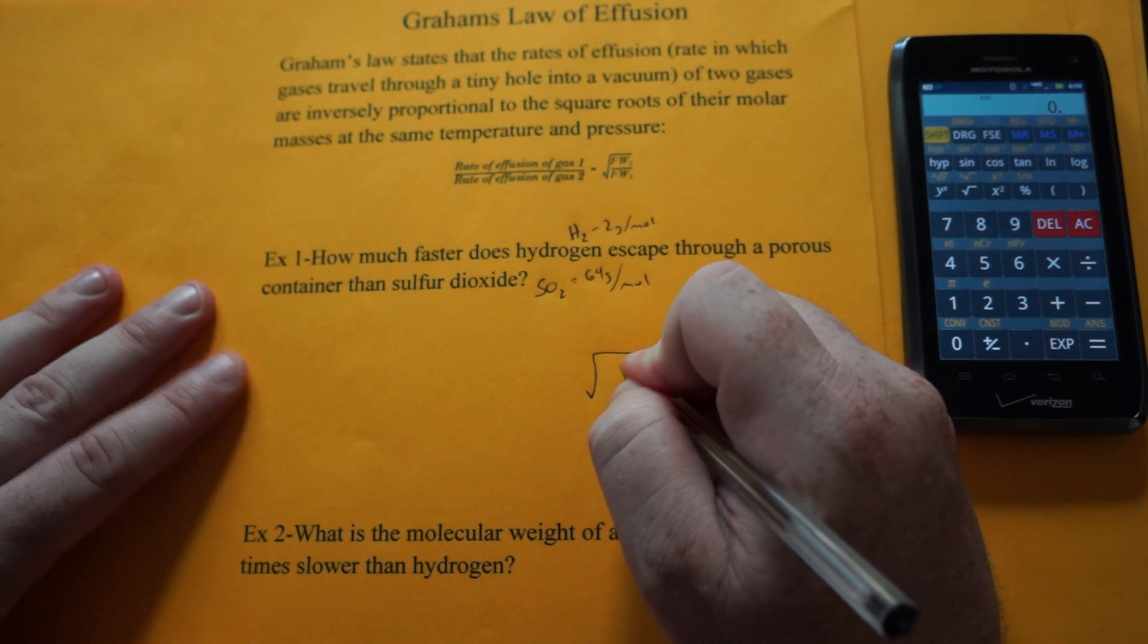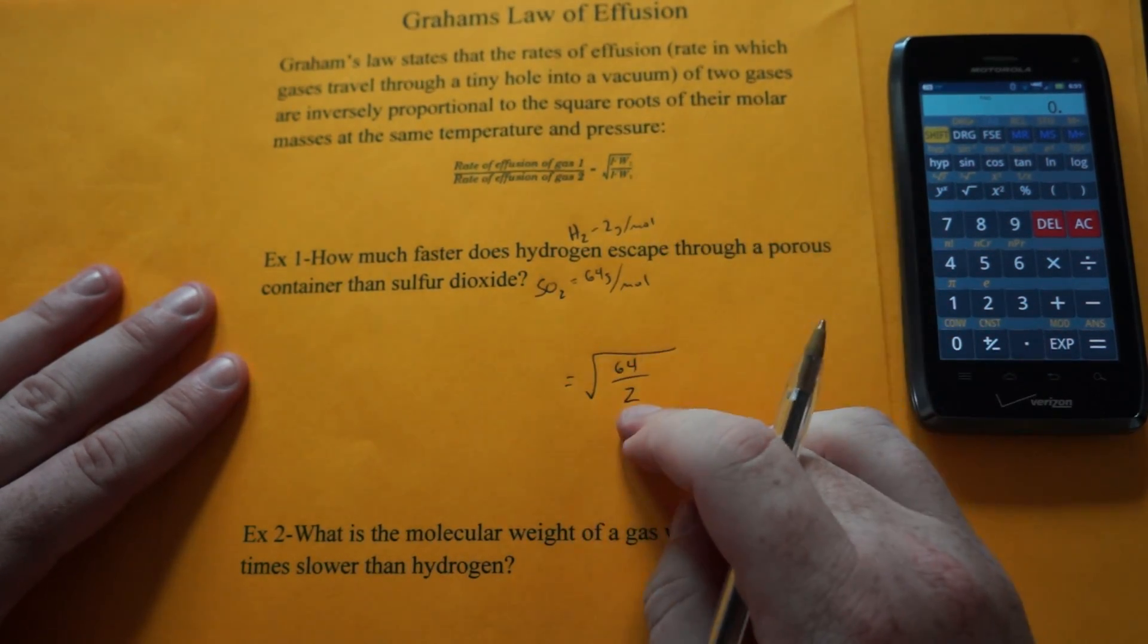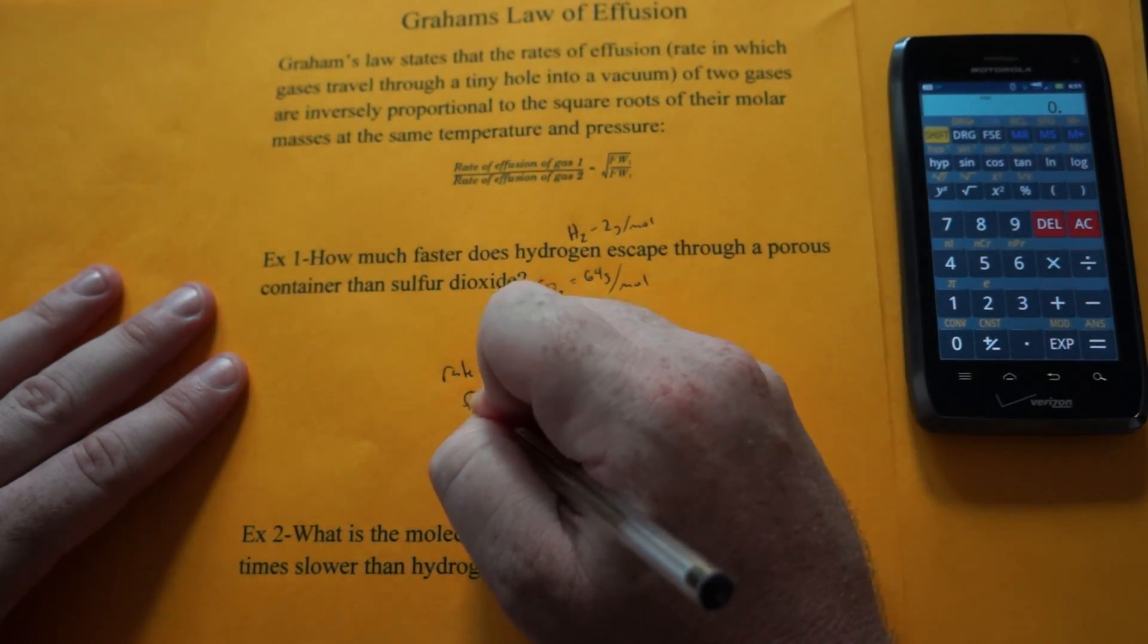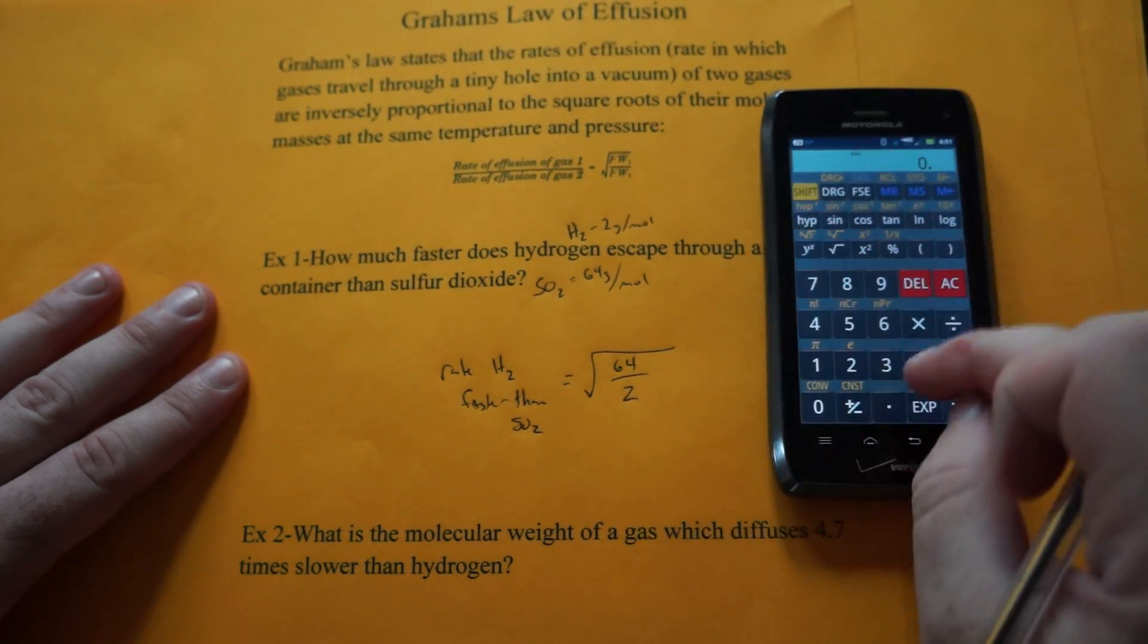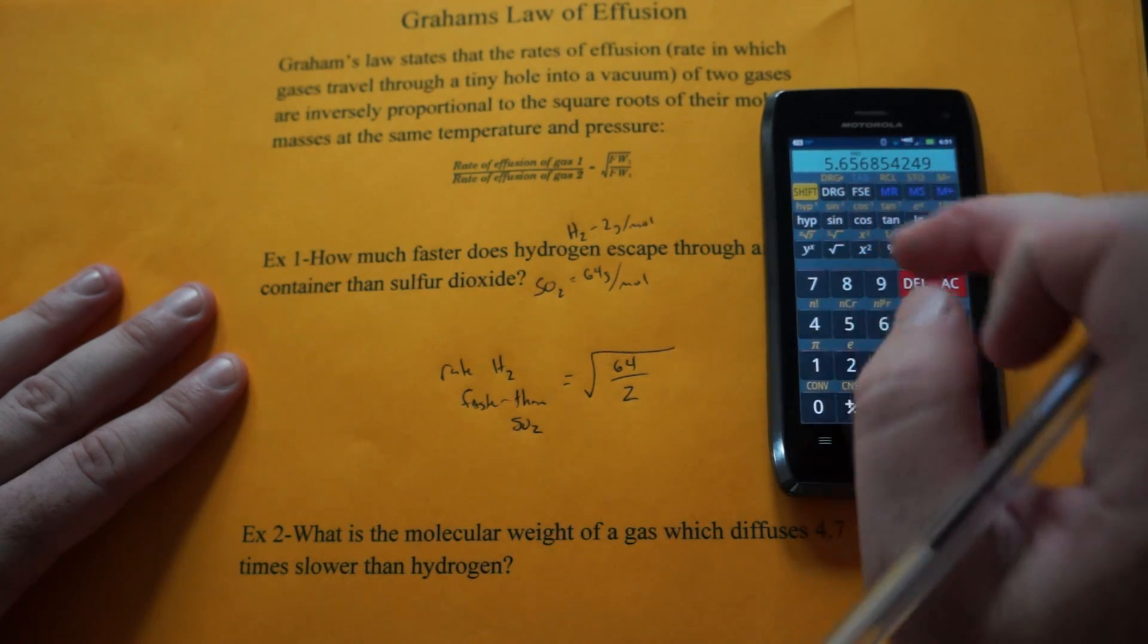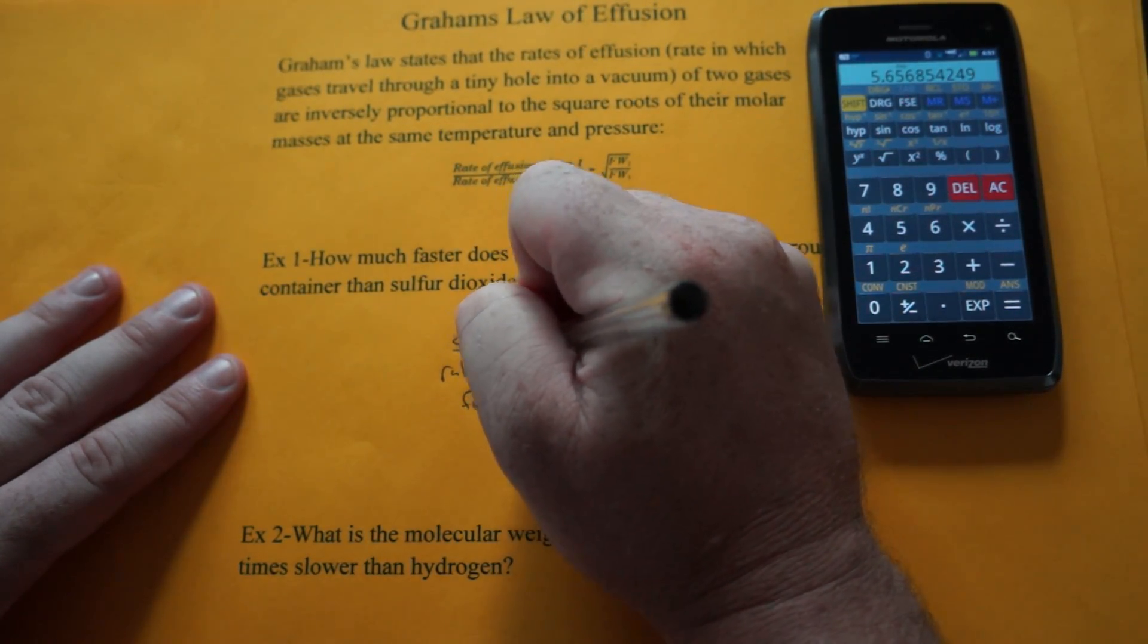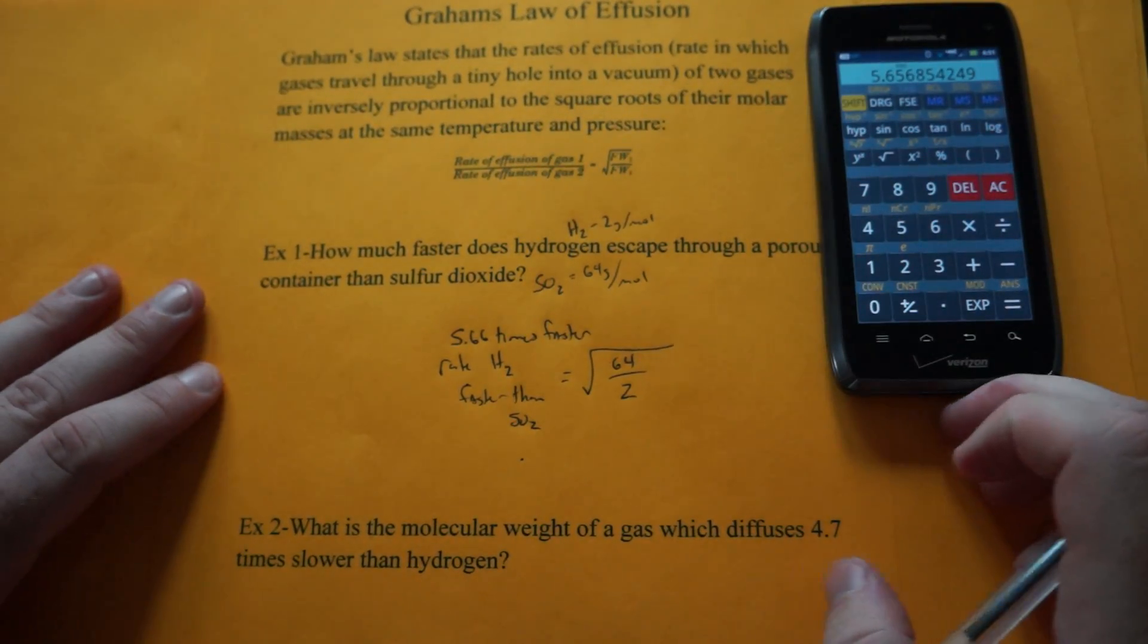Now what I do is I always put the heavier molar mass on top, 64 over 2, and since the 2 is on the bottom, 2 is hydrogen, this is the rate of hydrogen, how many times faster than SO2. So, 64 divided by 2, that's 32, and we take the square root, 5.66 times faster. So hydrogen escapes 5.66 times faster.